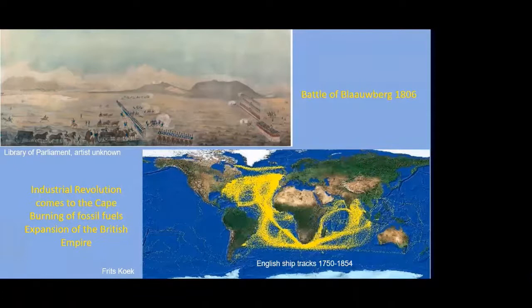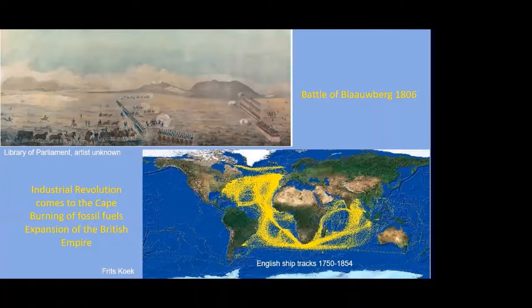The big transformations on the West Coast were really initiated with the arrival of the British. Many of you may be familiar with the Battle of Blouberg in 1806, when the British formally came and by force took over the Cape from the Dutch. The British were bringing with them the Industrial Revolution, which had its origins in the British Isles. The two fundamental features of the Industrial Revolution were the ability to tap fossil fuel energy — basically the burning of coal — and the development of cheap steel.